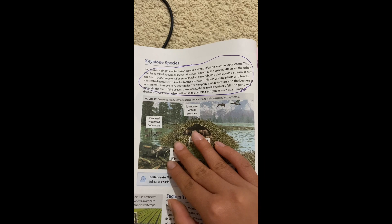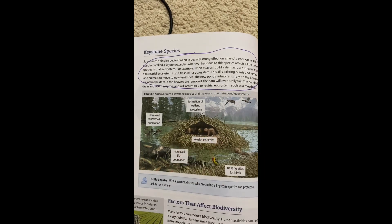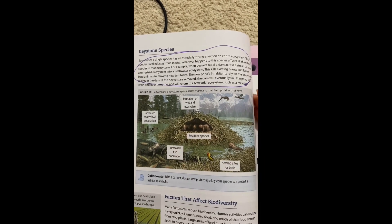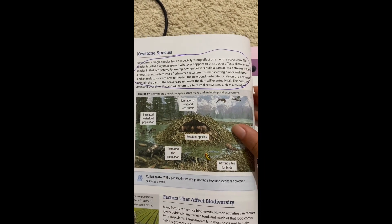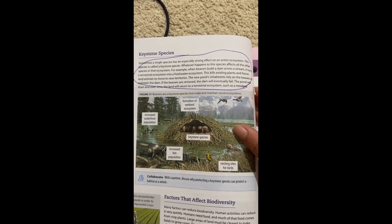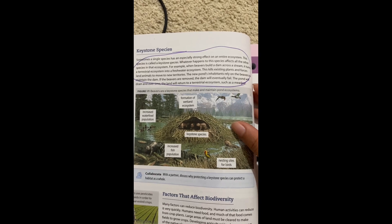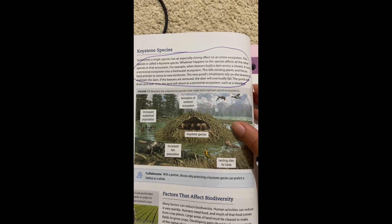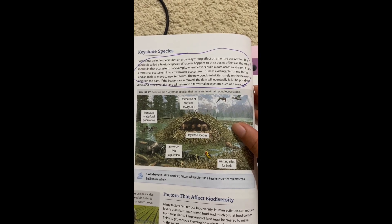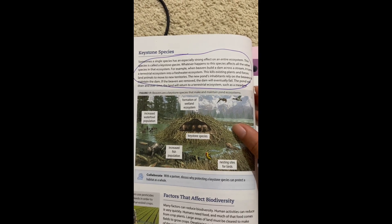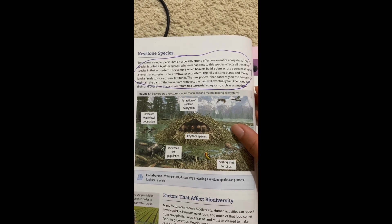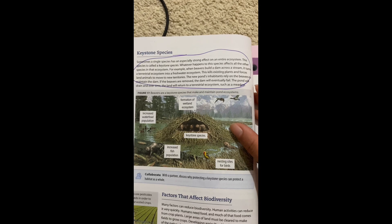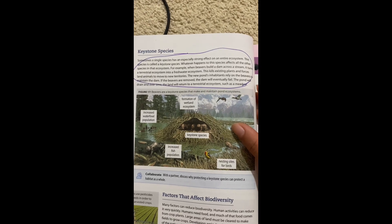If the beavers are removed, the dam will eventually fall. The pond will drain and over time, the land will return to a terrestrial ecosystem, such as a meadow.